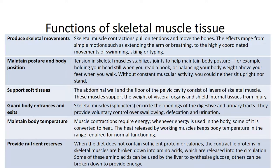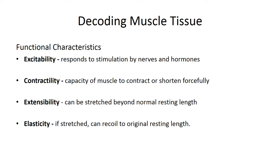Here are the functions of skeletal muscle tissue. Skeletal muscle produces skeletal movements, maintains posture and body position, supports soft tissues, guards entrances and exits of the body, maintains body temperature, and provides nutrient reserves. Make sure that you know the functions of skeletal muscle tissue and its characteristics. Note that excitability is sometimes also referred to as irritability and means that skeletal muscle has the ability to respond to stimuli, including stimulation by nerves and hormones.